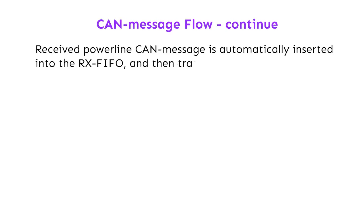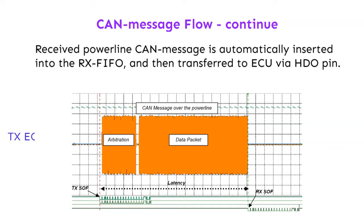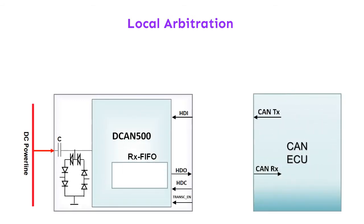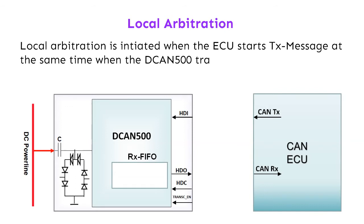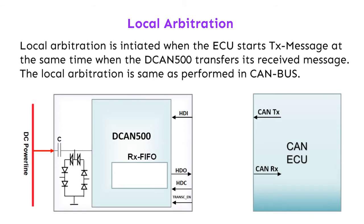A received powerline CAN message is automatically inserted into the RX FIFO, and then transferred to the ECU via the HDO pin. Local arbitration is initiated when the ECU starts a TX message at the same time the DCAN 500 transfers its received message. The local arbitration is the same as performed on a CAN bus.